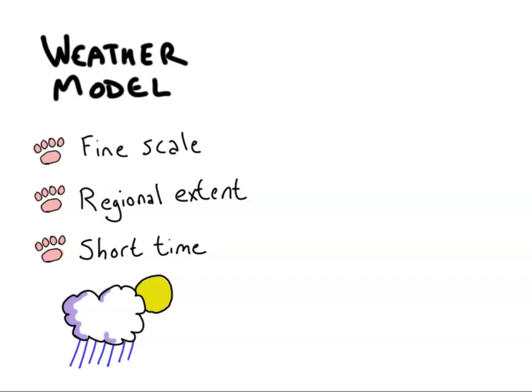Weather models are very fine-scale, showing a lot of geographical detail. They're often regional in extent. For example, a weather model might cover just the lower 48 United States. And because weather models are run for short time periods, they tend to ignore slower, longer-term changes, such as alterations in the concentration of greenhouse gases in the atmosphere.